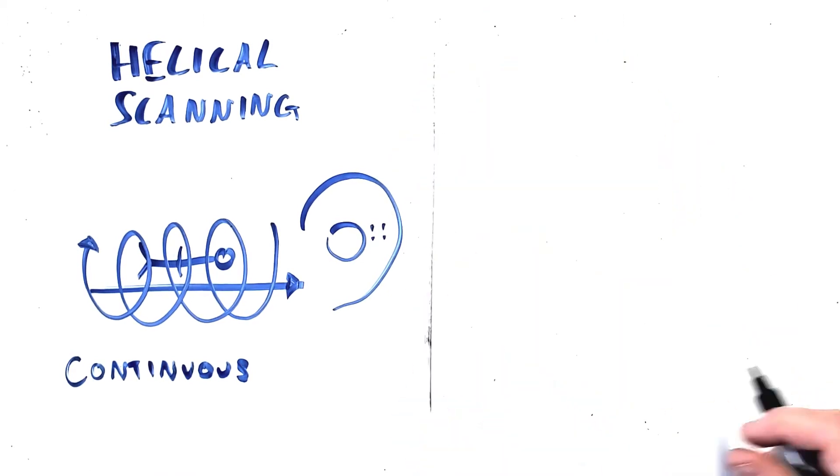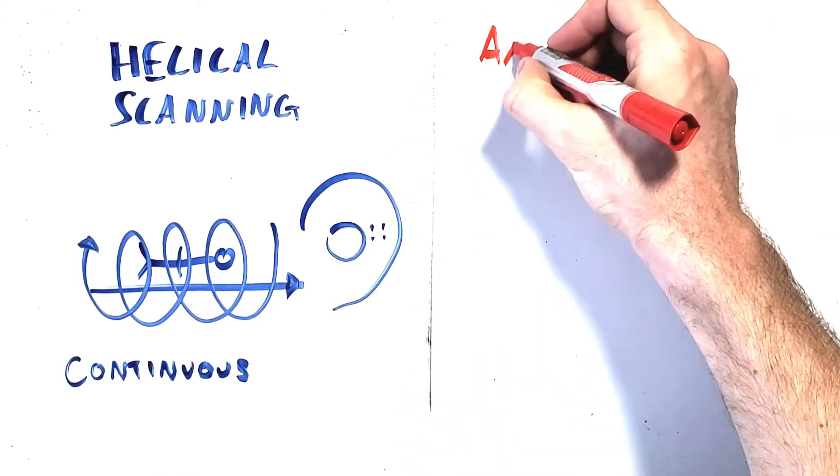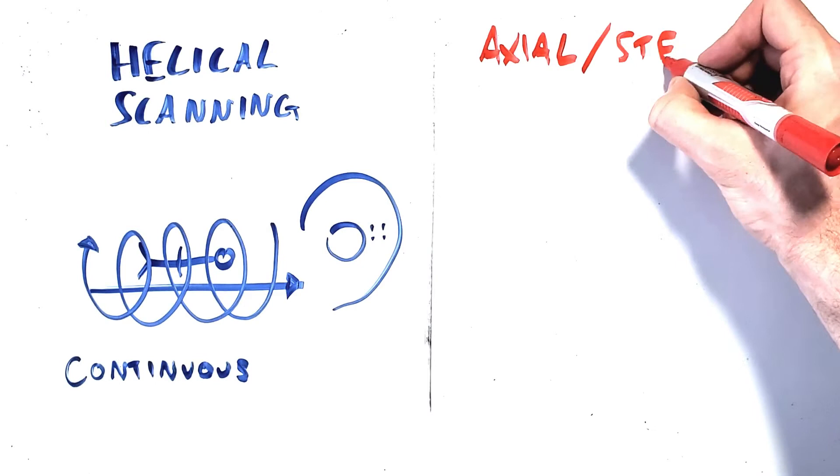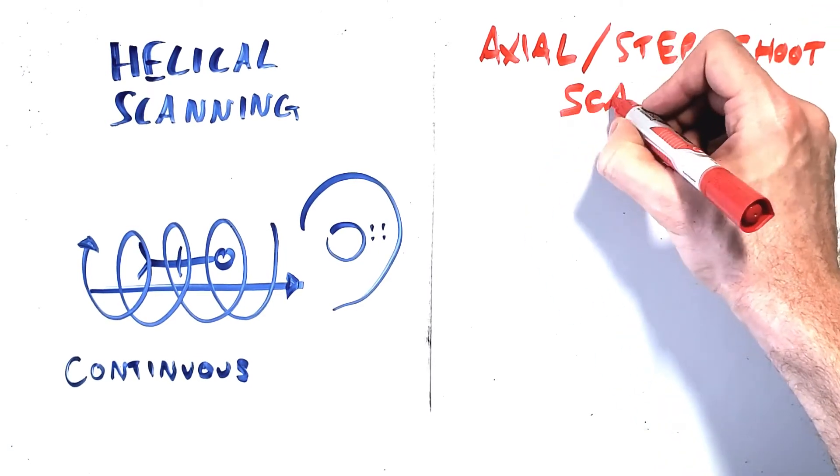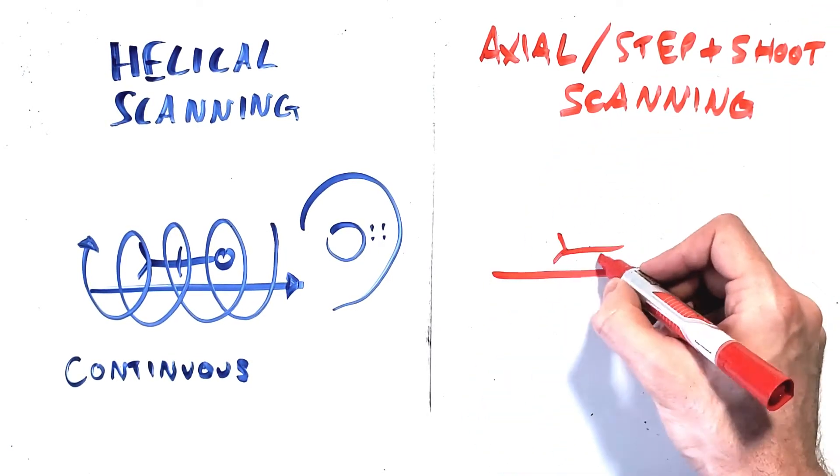This is in contrast to axial scanning or step and shoot scanning where the scanner would acquire one rotation, move the table in, acquire the next rotation, move the table in again, and so on.